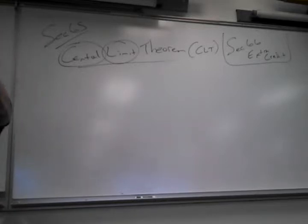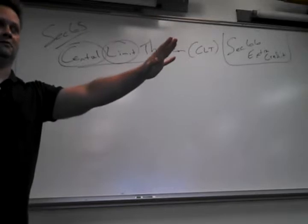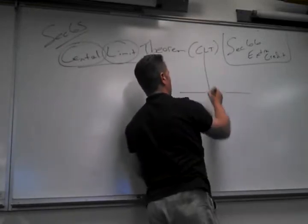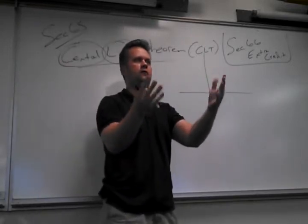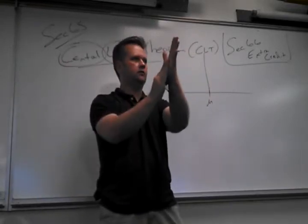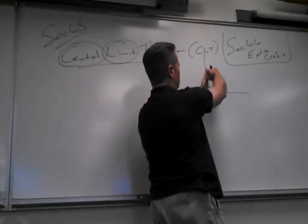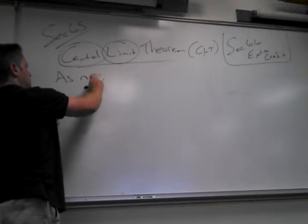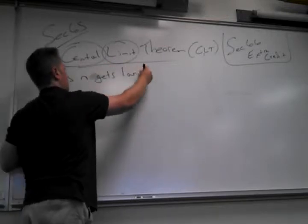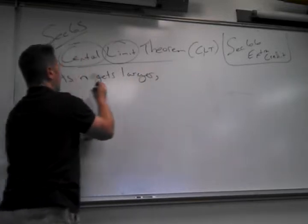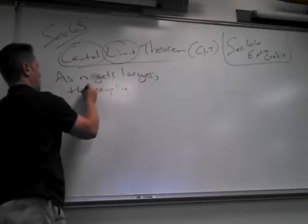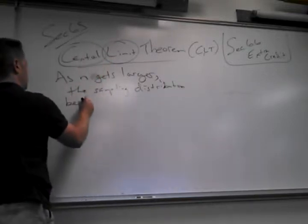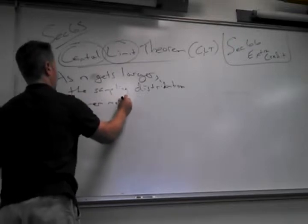If I took every single person in Florida — if my sample size was all of Florida and I plotted that — it would be right on the mean with no deviation. As n gets larger, the sampling distribution becomes more normal.